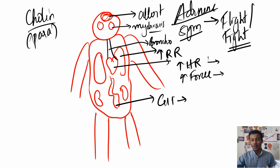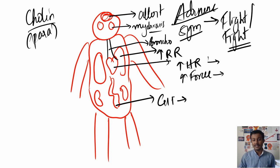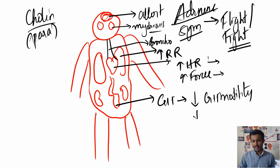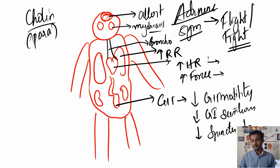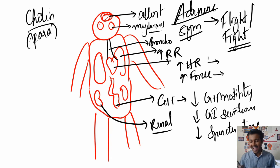When we come to the GI system — just imagine: while you're in fight mode, do you have time to go to the bathroom? No. So there is a decrease in GI motility and a decrease in GI secretions. If you're not eating, you don't need to go to the bathroom — and you don't have time to eat either. Hence that also decreases, and there is an increase in sphincter tone. The same goes for the renal system: increase in sphincter tone.